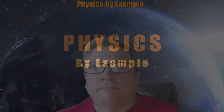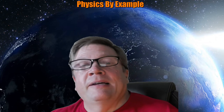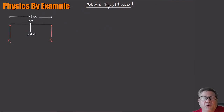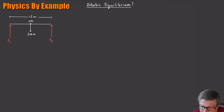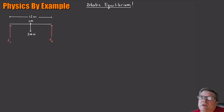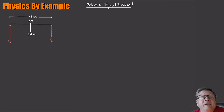Let's start static equilibrium by trying to do something very simple. Let's look at what happens if we try to support a board at the two ends. It's 12 meters long, its mass — gravity acts at the center of mass — pulling down with a force of 200 newtons, roughly a 50-pound board. Two people are holding it up with forces F1 and F2. What force do you need to apply at F1 and F2 to support this board?